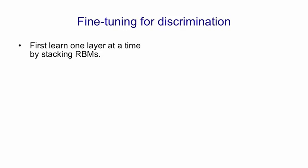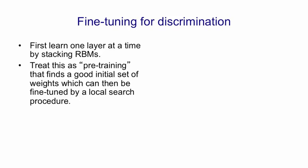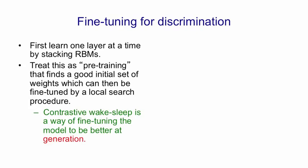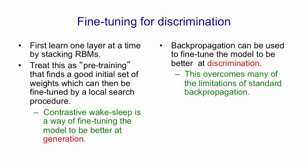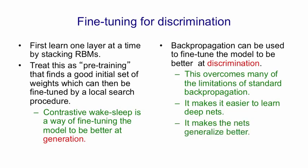We first learn one layer of features at a time by stacking up restricted Boltzmann machines. Then we treat this as pre-training that finds a good initial set of weights in a deep neural network, and we fine-tune those weights using a local search procedure. In this video we're going to use back propagation to fine-tune a model to be better at discrimination. Doing this overcomes many standard limitations of back propagation — it makes it much easier to learn deep nets and makes those nets generalize better.